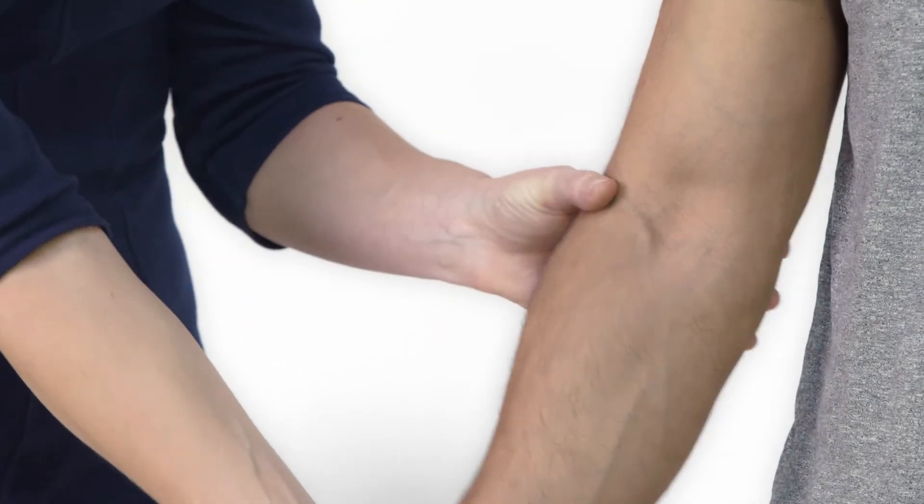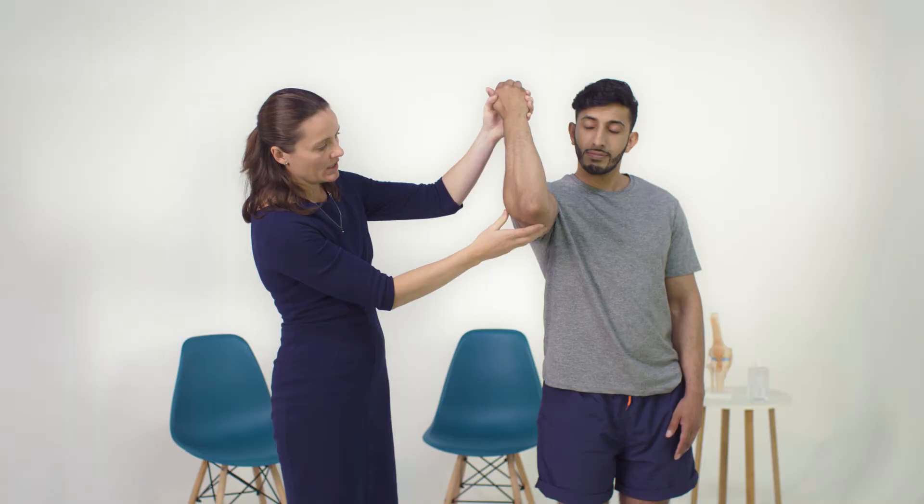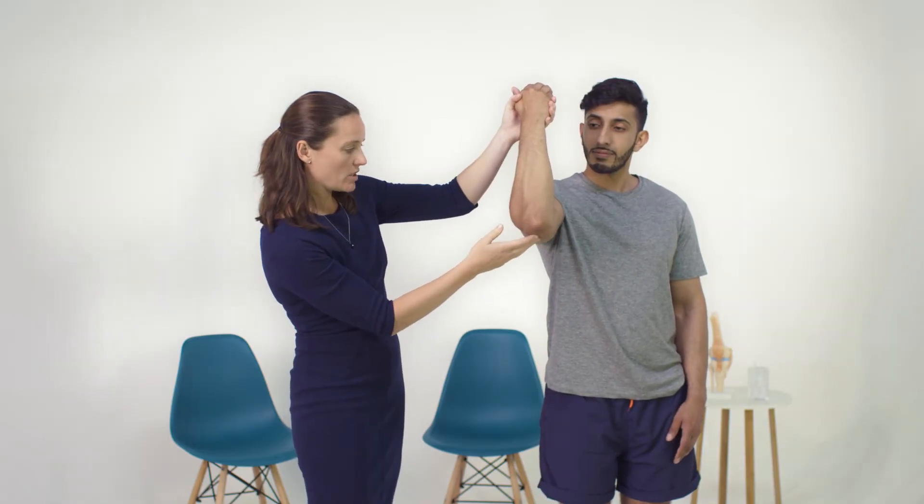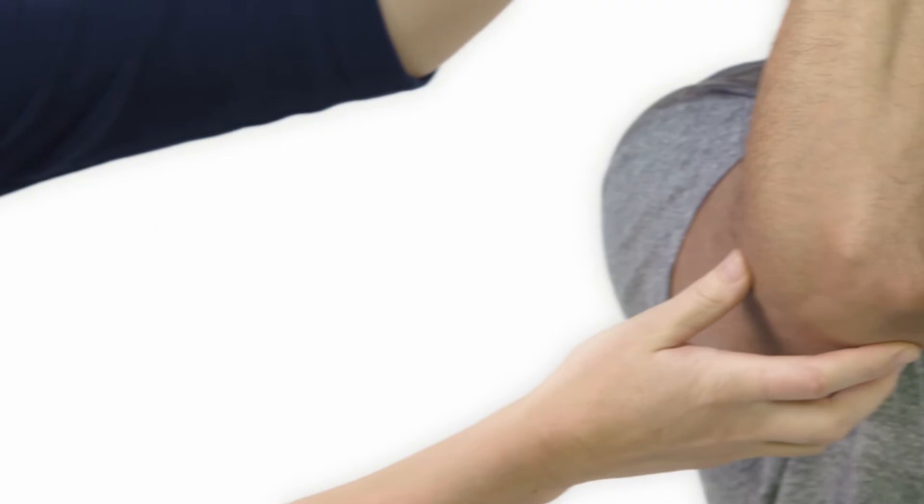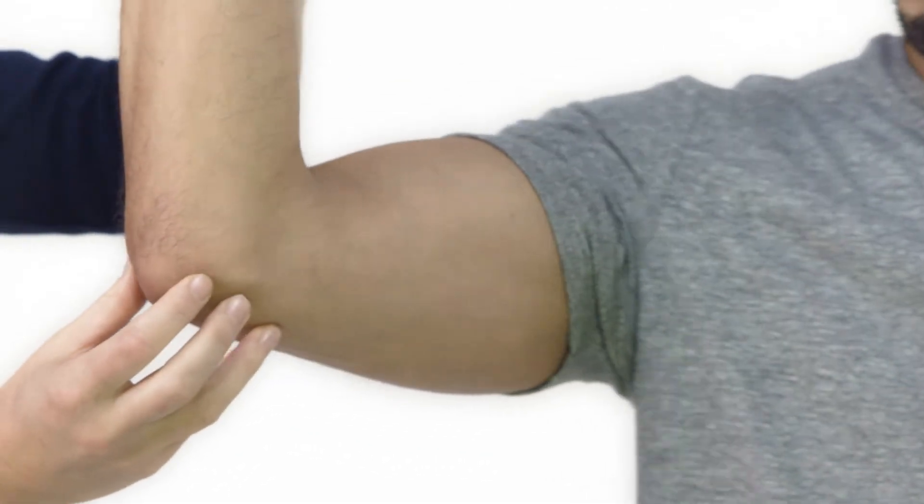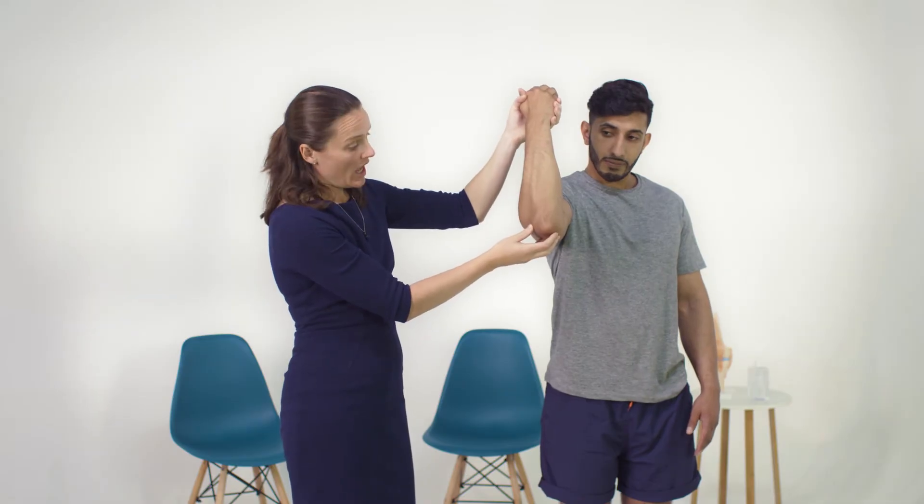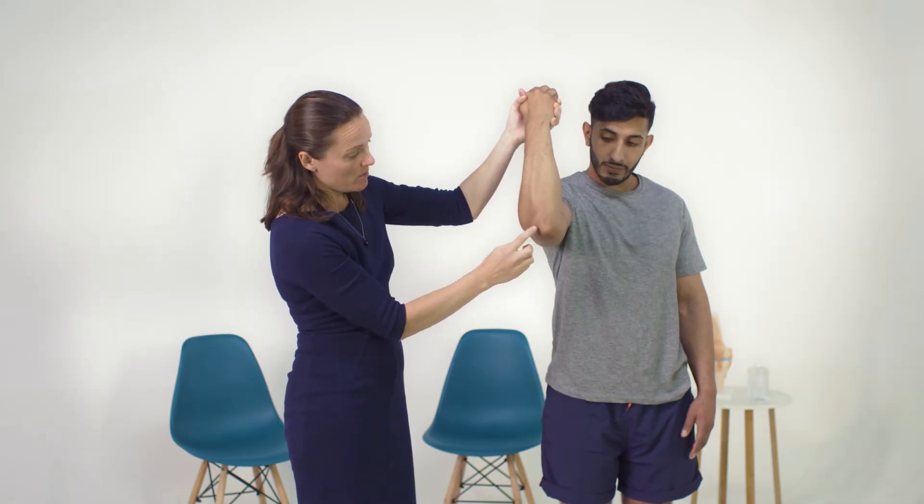I'm now going to inspect the posterior aspect of the elbow for any abnormalities. So we're looking particularly here for any scars, any visible swelling or deformity and you can look on both the lateral and the medial aspects. You may also see other things on the back of the elbow such as rheumatoid nodules, you may see a swelling over the olecranon and olecranon bursitis or you may also see psoriatic plaques.